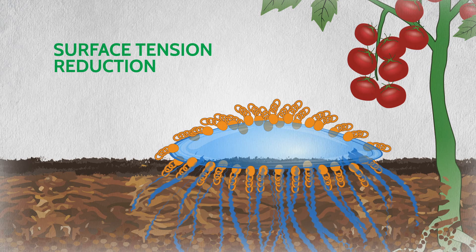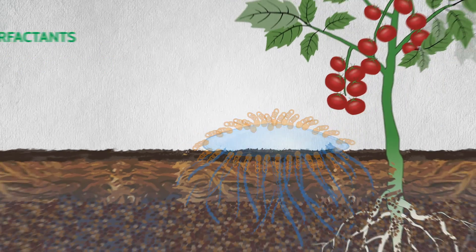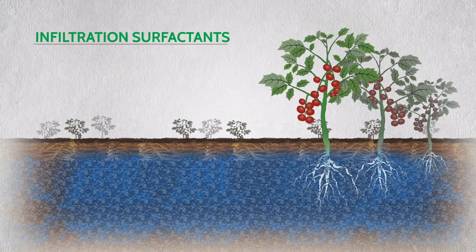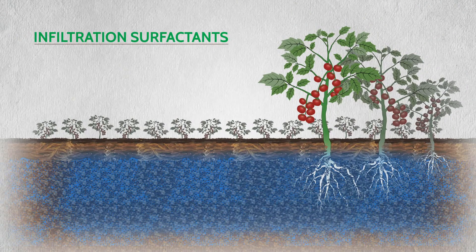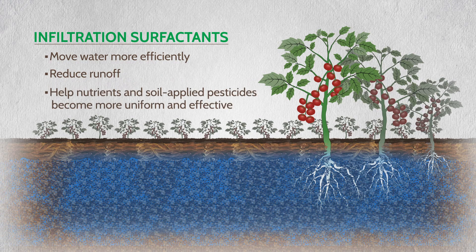Surface tension reduction causes water to infiltrate cracks and crevices in the soil and to move throughout the plant root zone. As water treated with an infiltration surfactant moves more efficiently into the soil, runoff is reduced and nutrients and soil-applied pesticides become more uniform and effective.